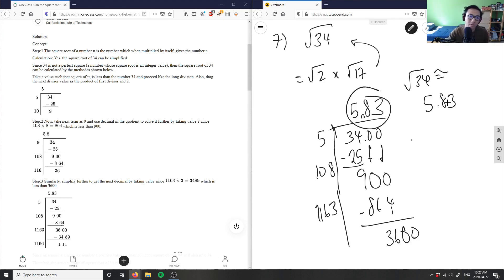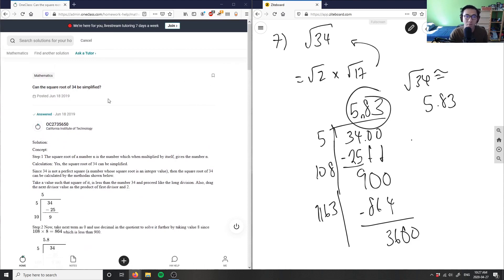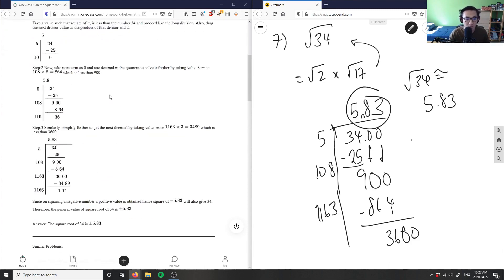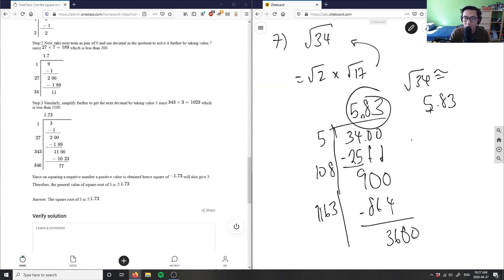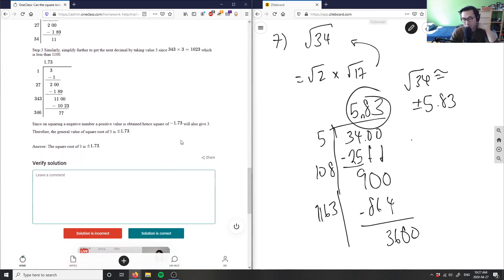However, the question was asking us can the square root of 34 be simplified. In this case I would write simply no. They gave us some solution in terms of what this is in decimals, but technically it's still the correct answer. I think the student was asking about a simplified radical form rather than an approximation.